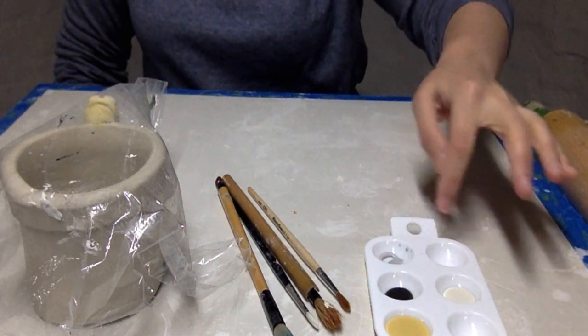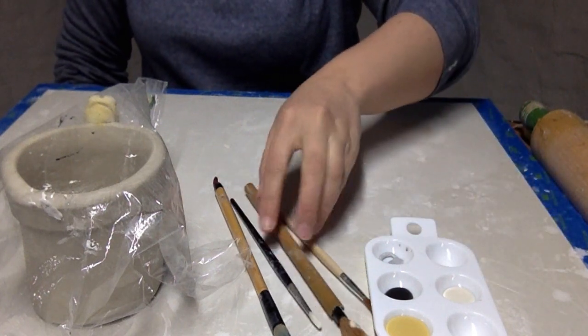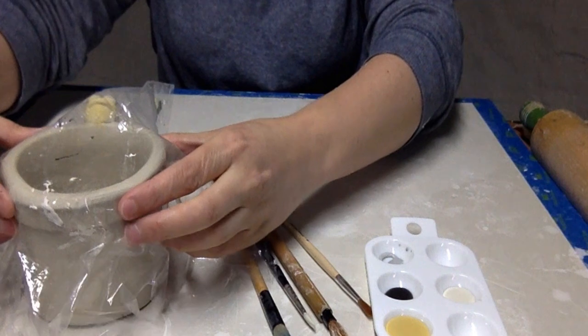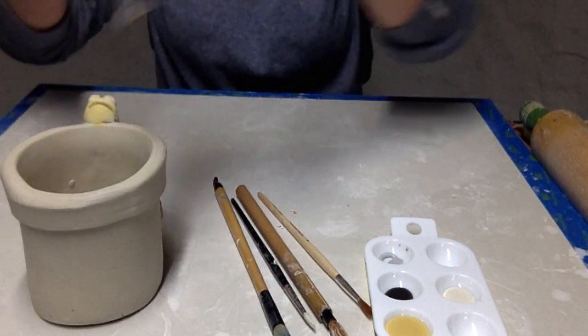I've let the planter dry out a bit and I'm ready for underglaze. I have the underglaze colors I would like here: yellow, black, and white, and some paint brushes.